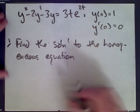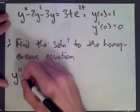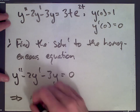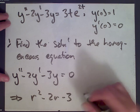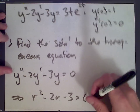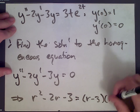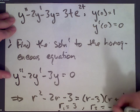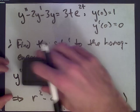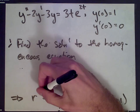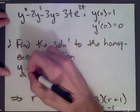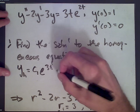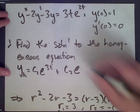We get y double prime minus 2y prime minus 3y equals 0, and so we get the corresponding auxiliary equation and solve it. This involves finding the roots. We factor to get r minus 3 times r plus 1, so the roots are r1 equals 3 and r2 equals negative 1. The solution to the homogeneous equation is yh equals c1 e to the 3t plus c2 e to the negative t.